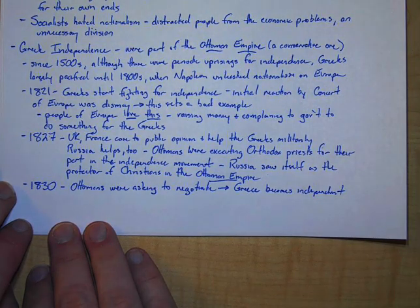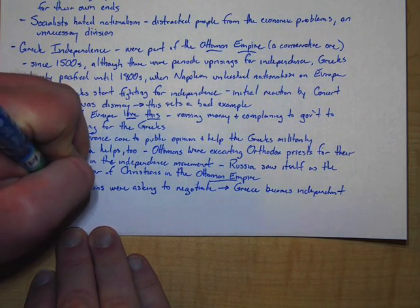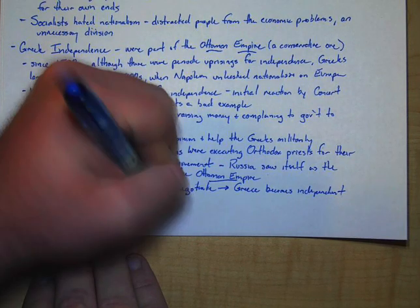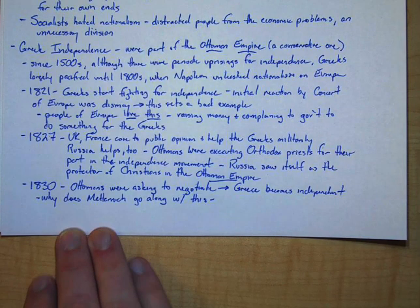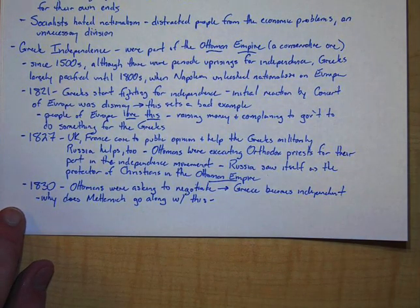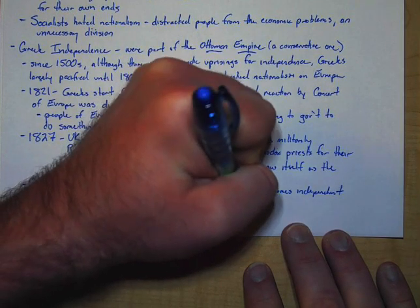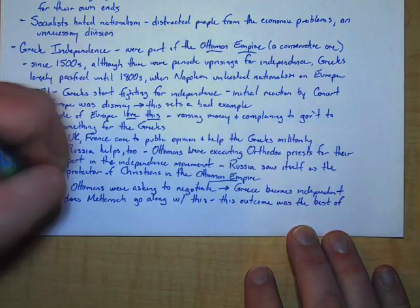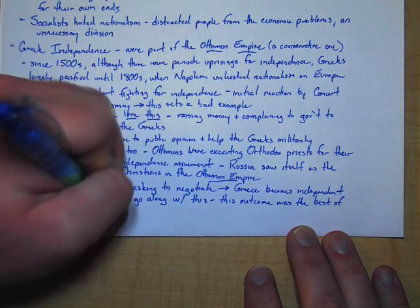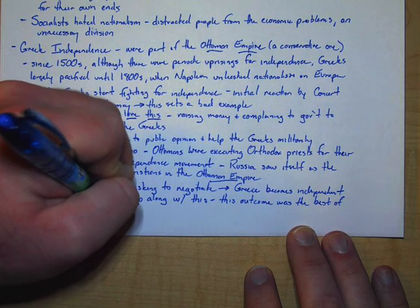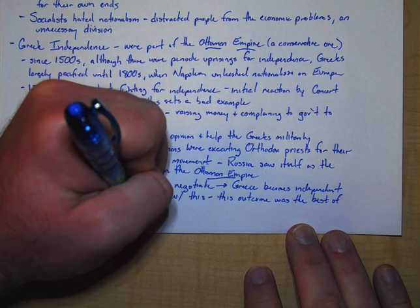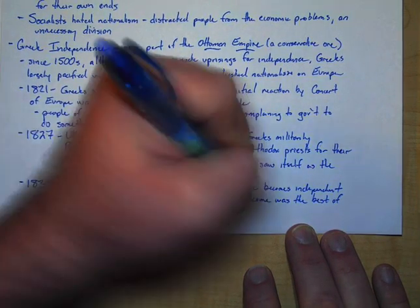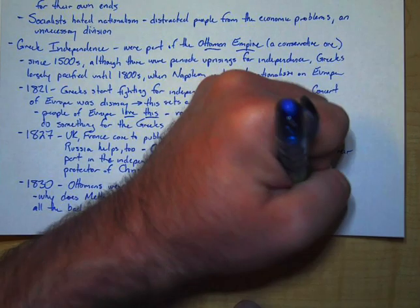You might ask yourself, why does Metternich go along with this? Metternich was nothing if he wasn't a pragmatist. He was a realist. And this outcome was the best of all the bad outcomes that could have happened. This was a quick end to a conflict that could have been much worse.